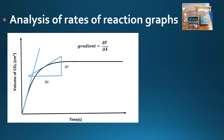Analysis of rates of reaction graphs. Let's say you've carried out your rates of reaction experiment. In this example it's calcium carbonate and hydrochloric acid producing carbon dioxide gas, and you've measured the volume over a certain time period. Then you plot a graph of volume of CO2 on the y-axis over time on the x-axis.